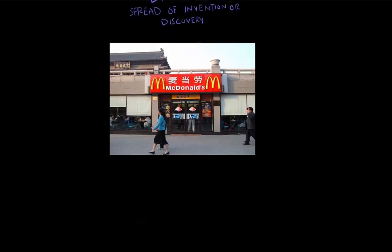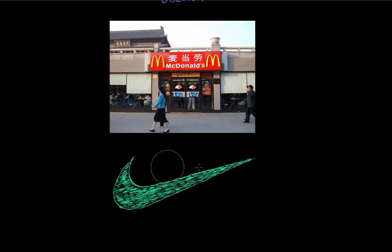Also, clothing companies like Nike located in Australia or Japan would be another example of cultural diffusion.